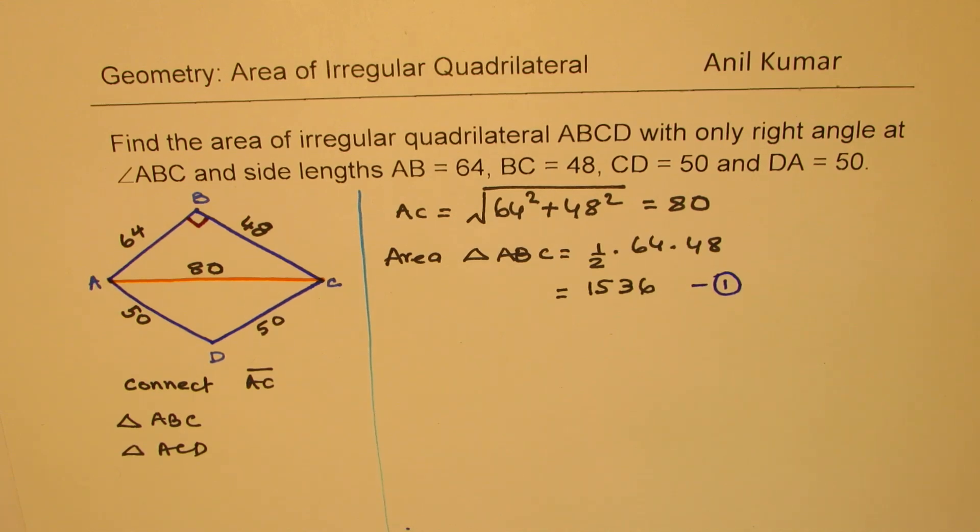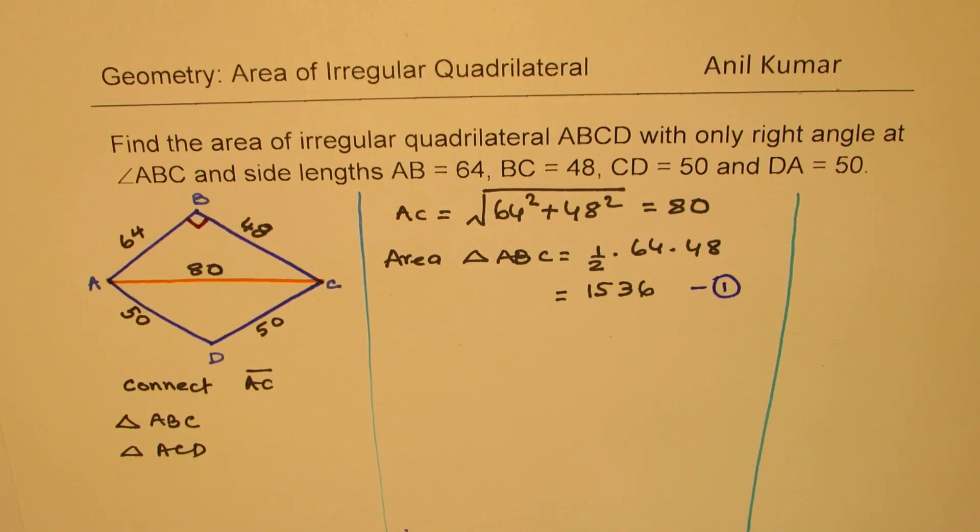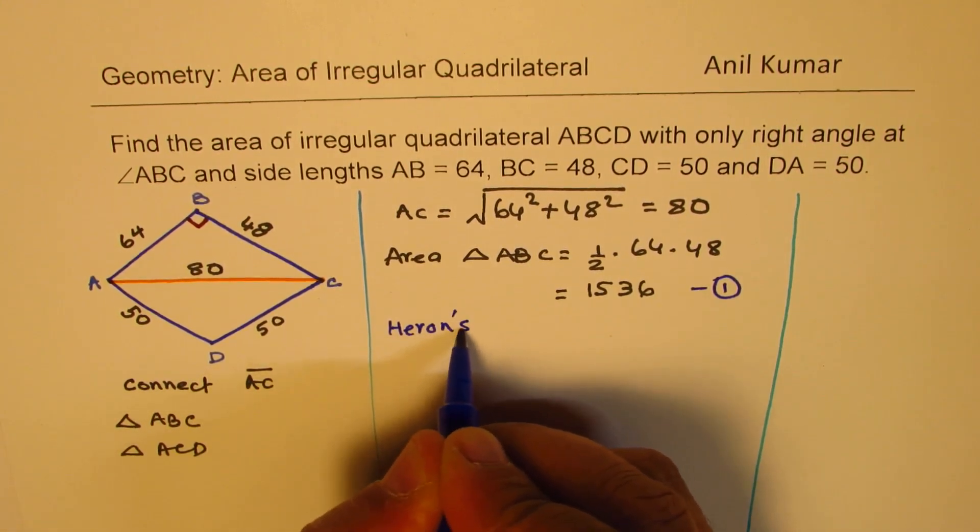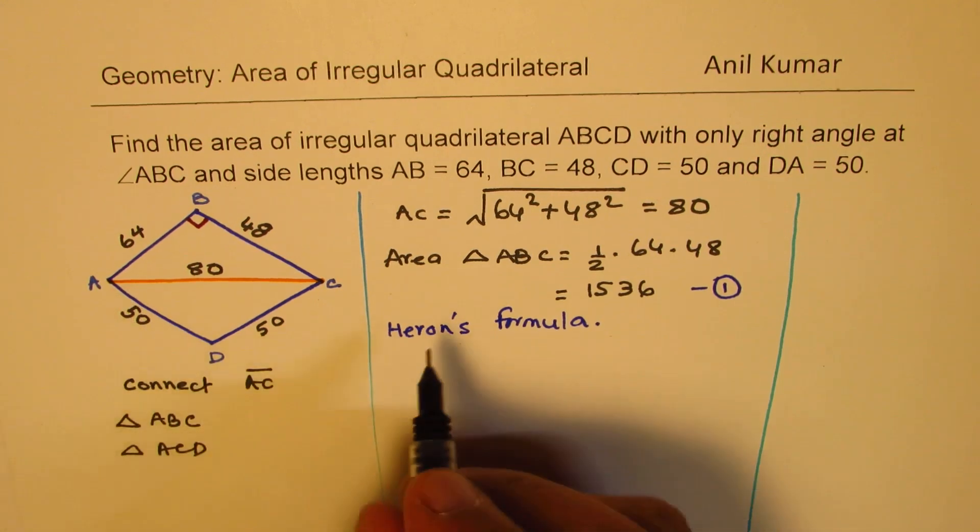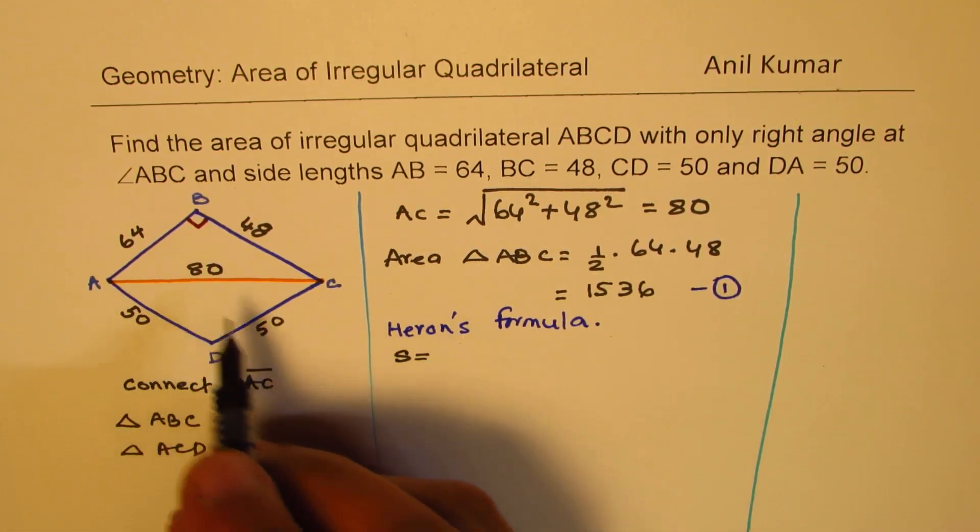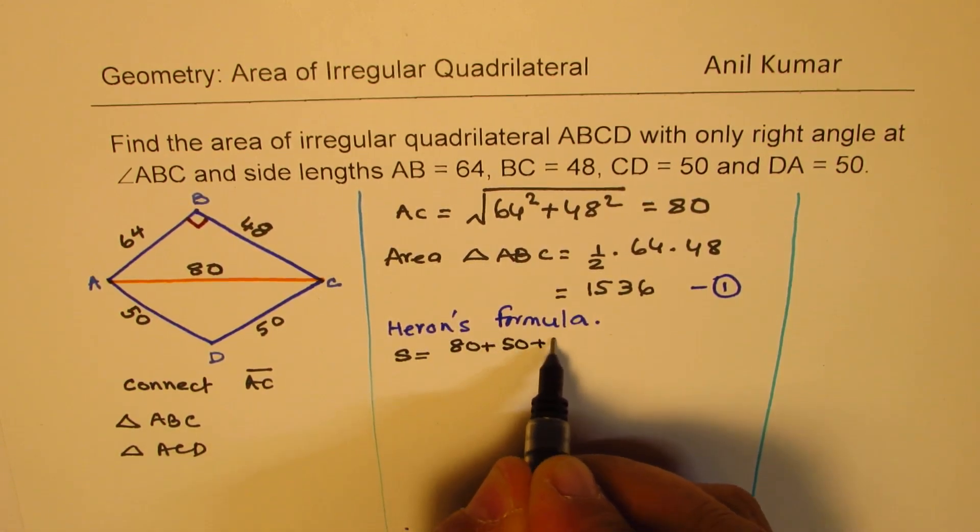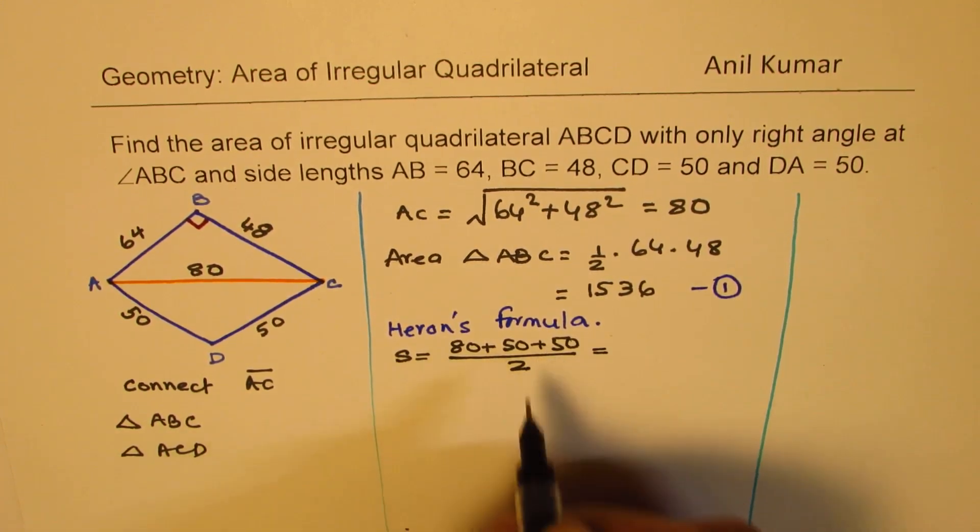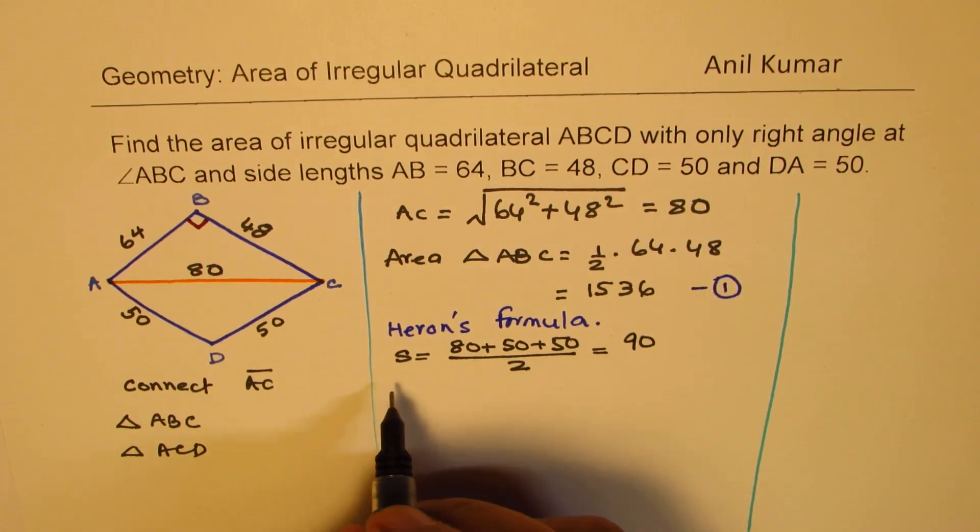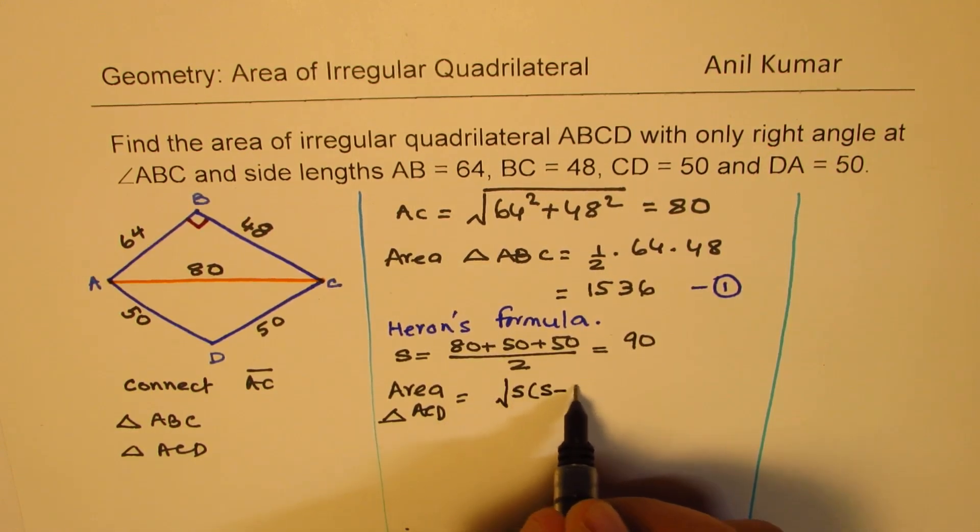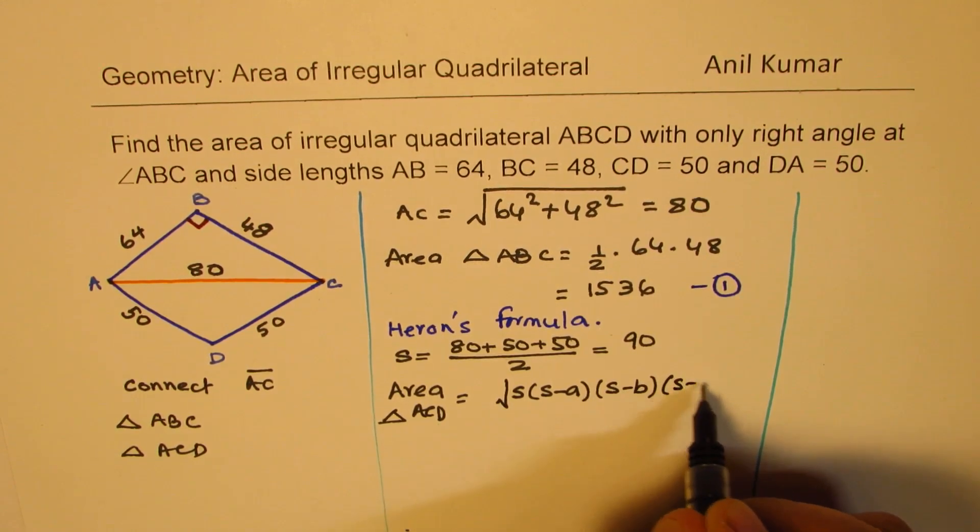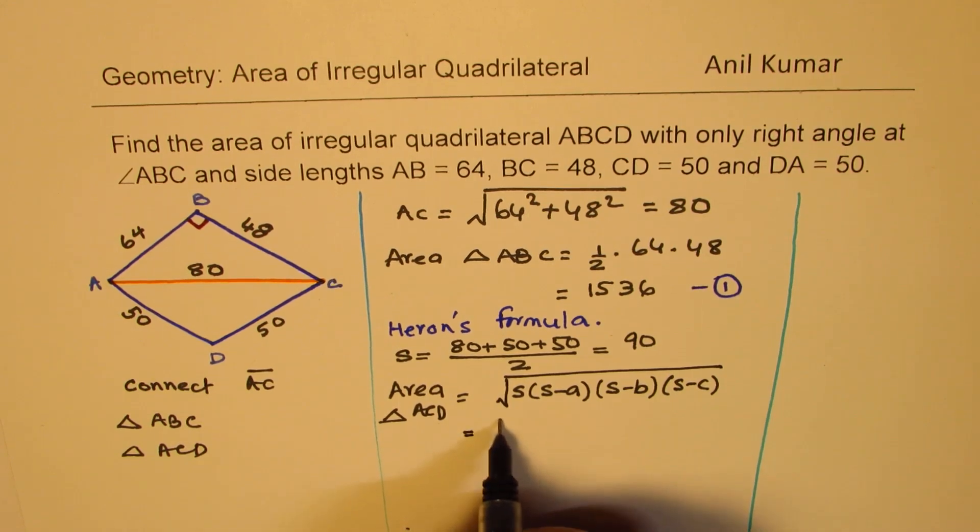Now, how do we find area of the other triangle? Well, to find the area of the other triangle, we should use Heron's formula. So let's find sum S, which is sum of average, sum of all the sides divided by 2. So S is 80 plus 50 plus 50 divided by 2. 180 divided by 2 is 90. So we get the value of S. And then we can say area of triangle ACD will be equal to square root of S times S minus A times S minus B times S minus C. So that's the formula. So substitute the values.